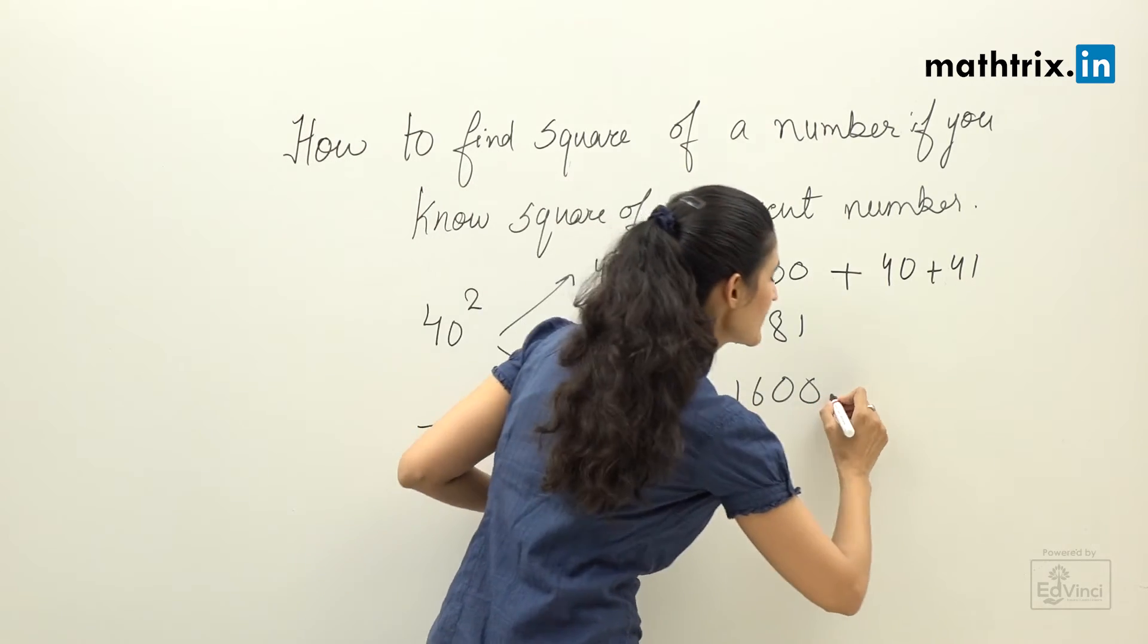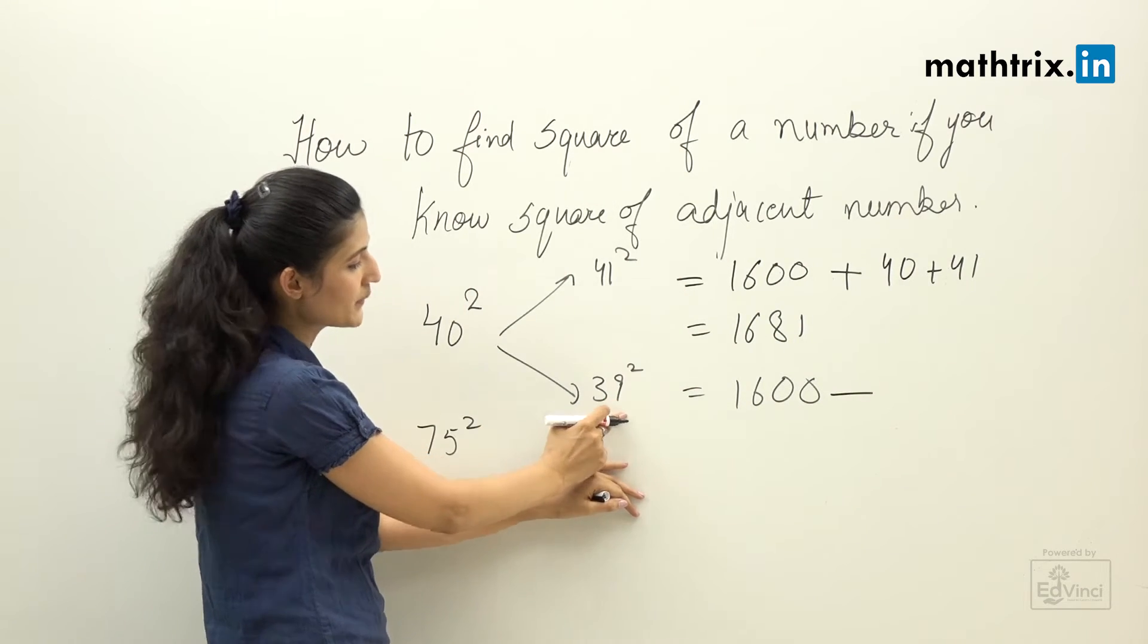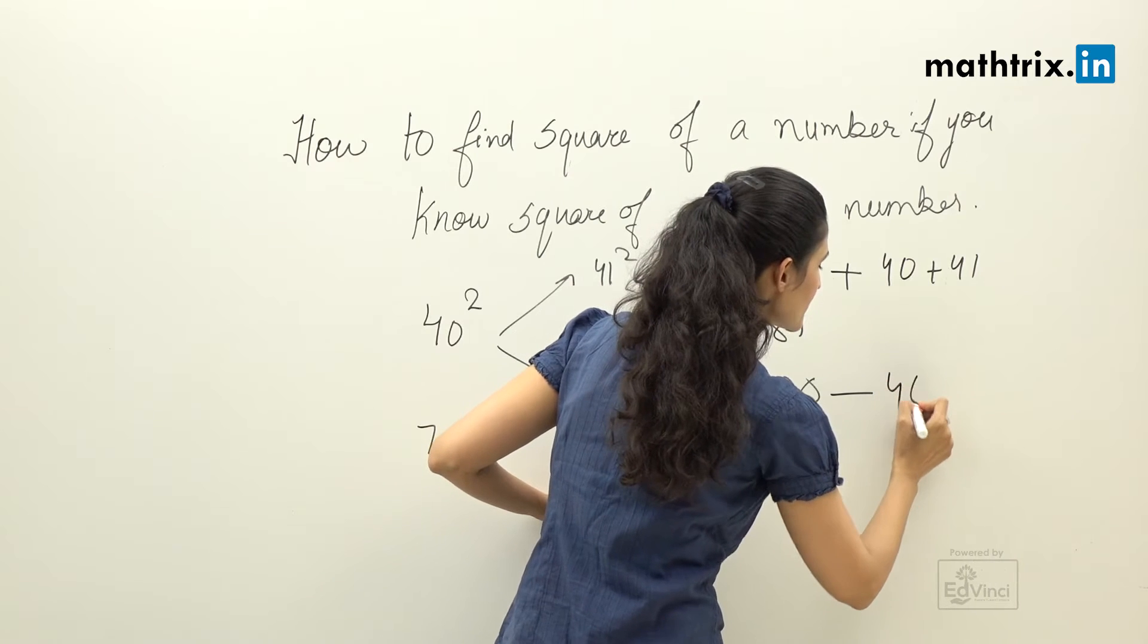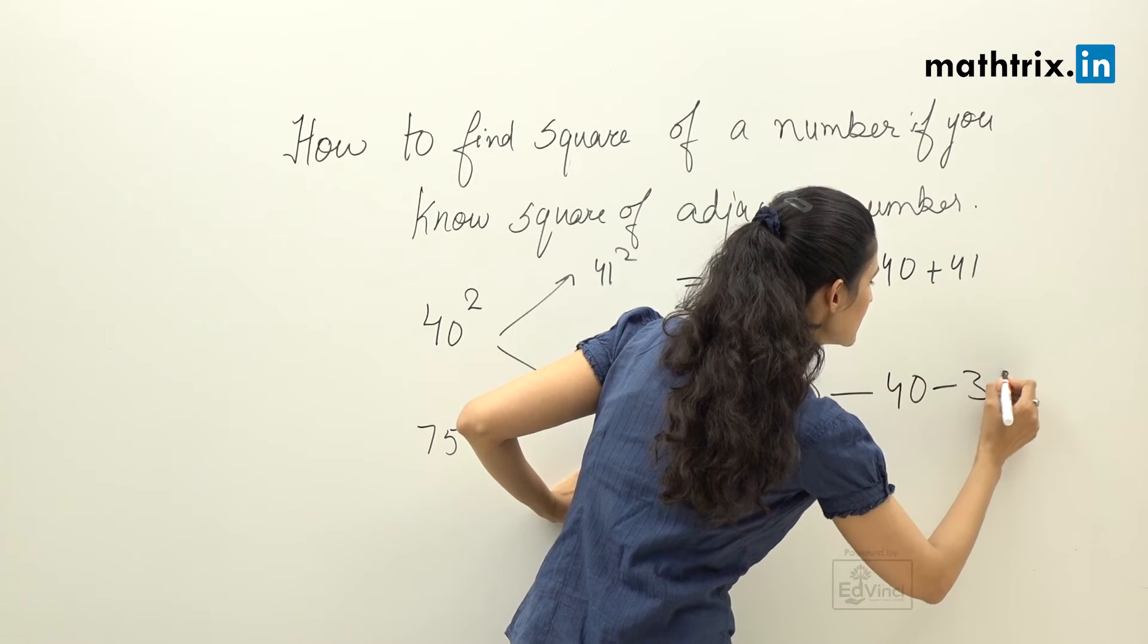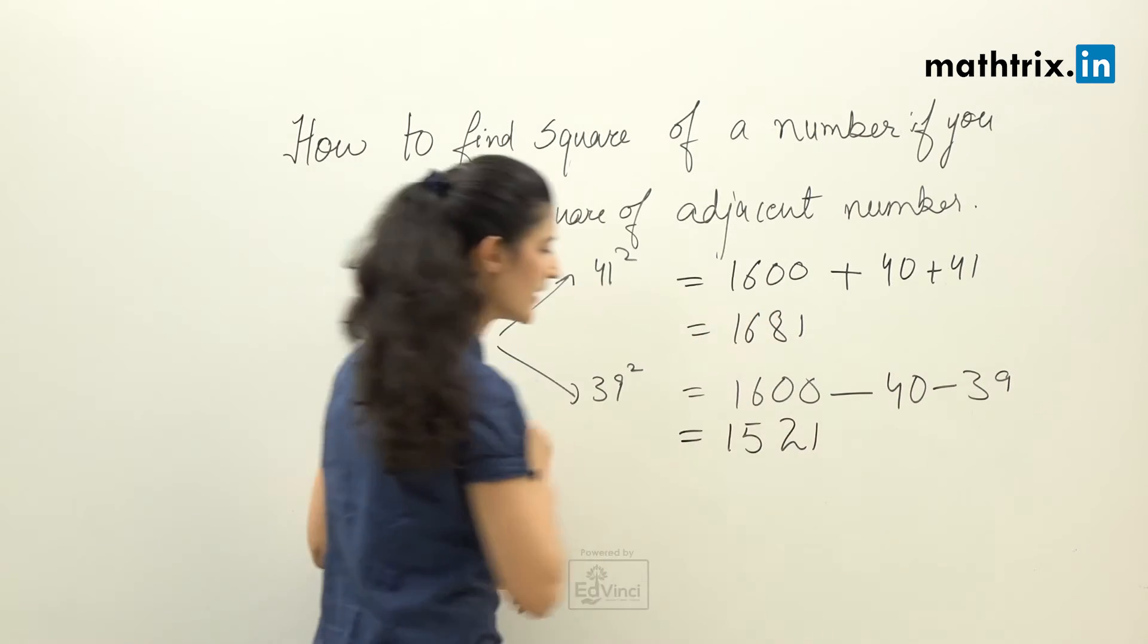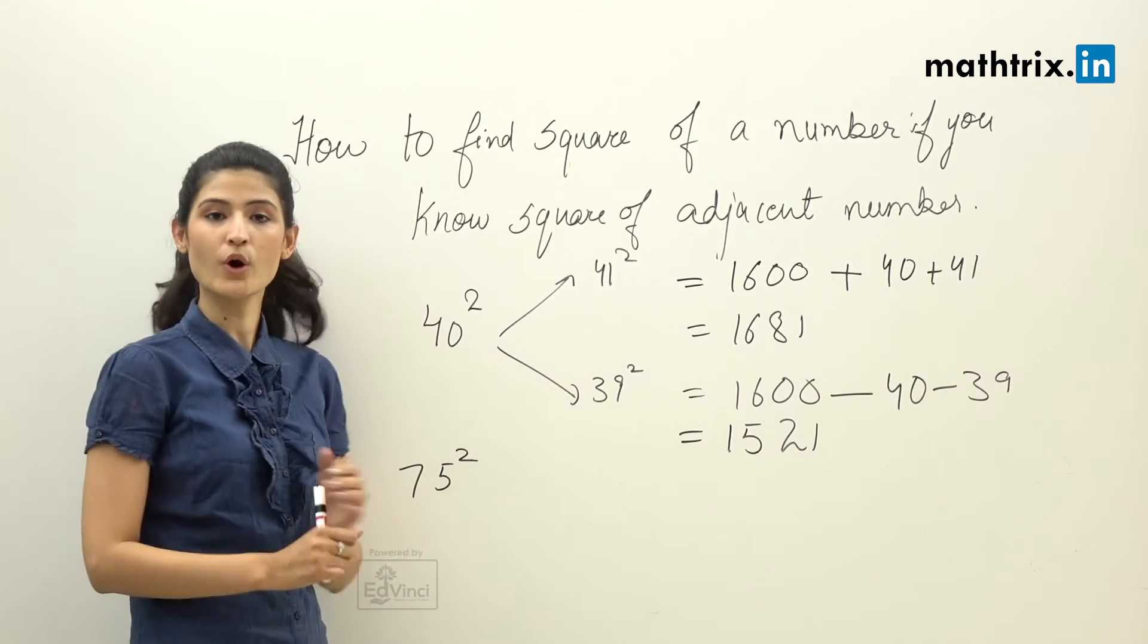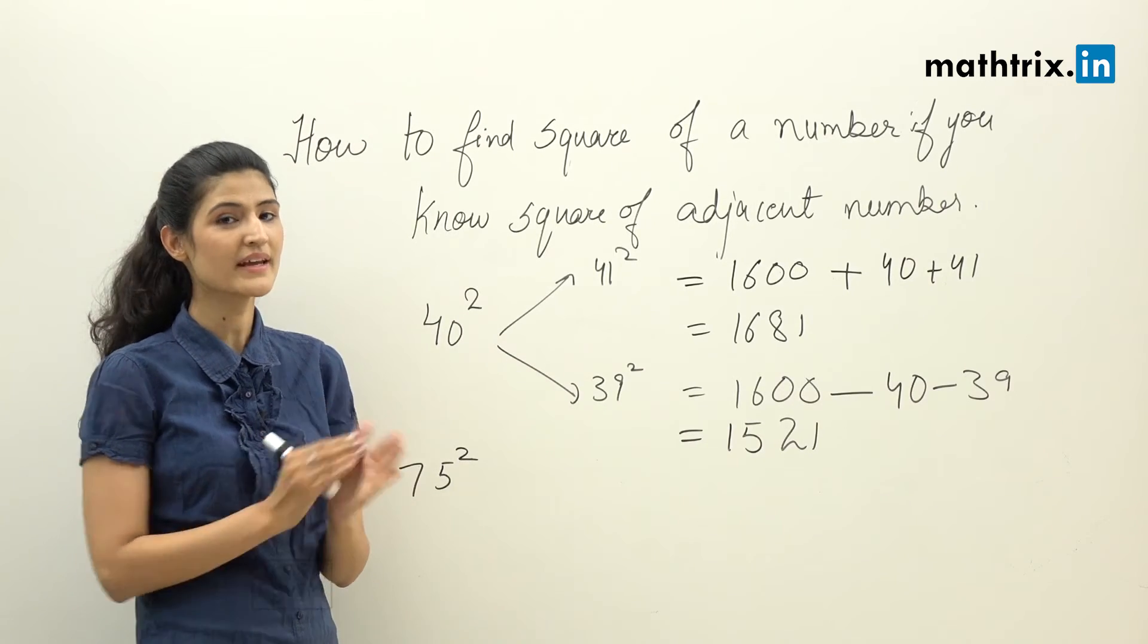Same way, we know 39 is less than 40, so what we're going to do is from 1600 we're going to subtract the adjacent number and the number itself, which is minus 40 and minus 39. So the answer is 1521.